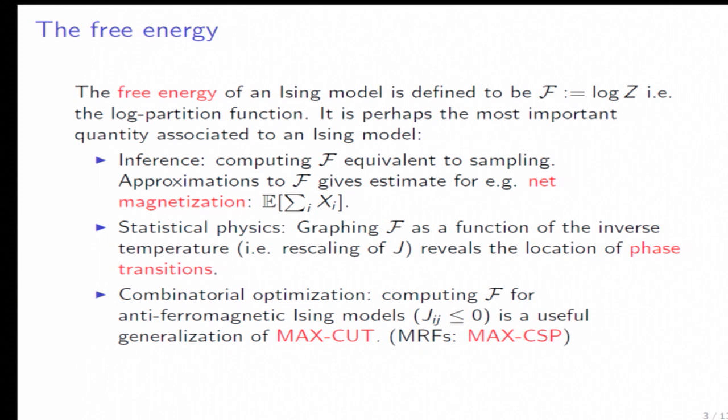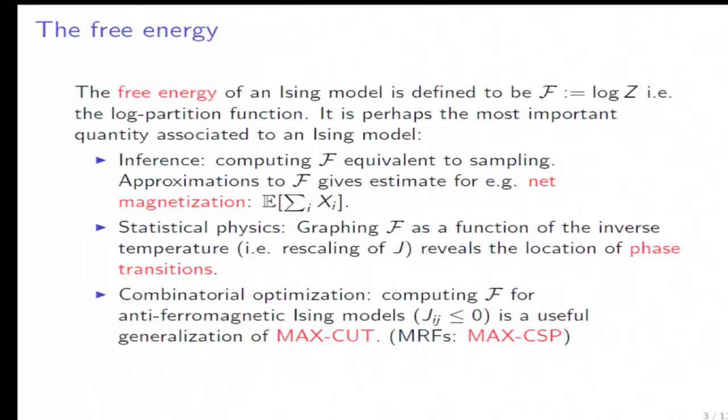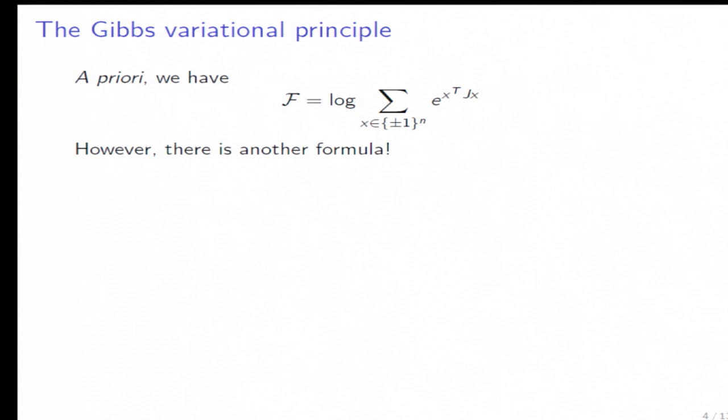So what do we want to compute in this Ising model? Well, we want to compute the log partition function, which I'll call the free energy. So this is probably the most important thing to compute. So if you were to graph the free energy as a function of so-called inverse temperature, which is rescaling the edge weights, then you would find the locations of phase transitions, which is of course the classical thing to do in statistical physics.